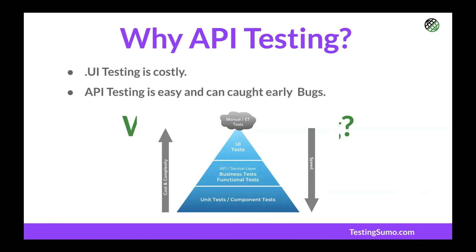Another reason API testing is important is that UI testing is very costly. Locator changes are a major challenge, and people are moving toward Progressive Web Applications (PWA) which have dynamic locators, making it difficult to maintain the automation framework. Modern frameworks like React, Vue.js, and Angular use XHRs or asynchronous calls, making UI testing frameworks costly and highly maintenance-intensive.